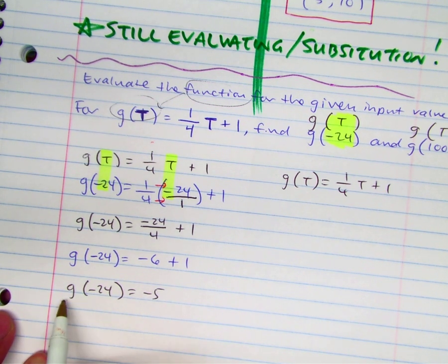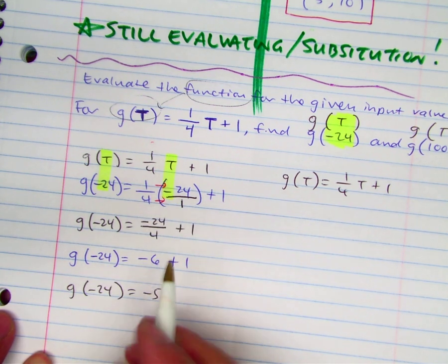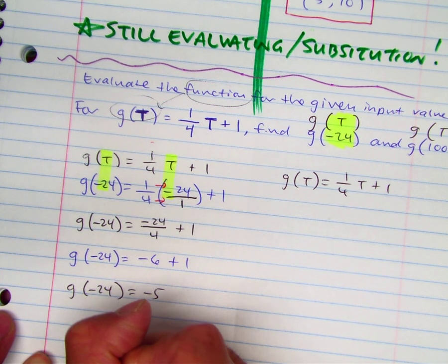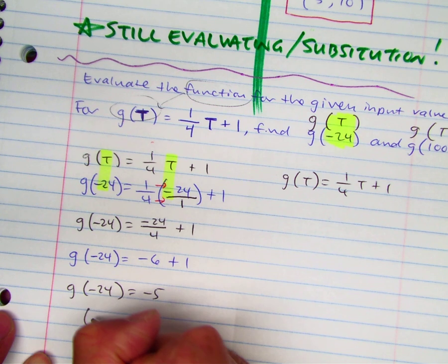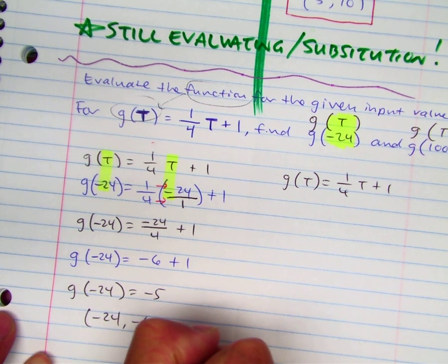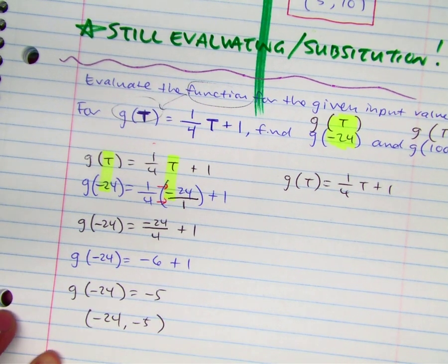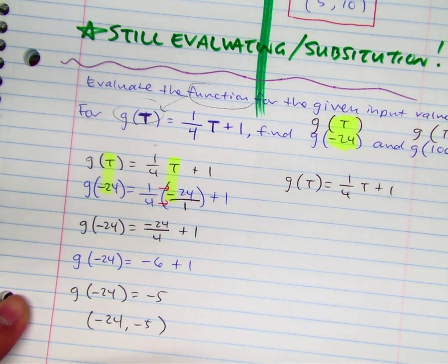So my answer is g of negative twenty-four equals negative five. My input is negative twenty-four; when I put it in there, I got negative five. Remember, you can make that as an ordered pair: negative twenty-four comma negative five. So this is our first answer.